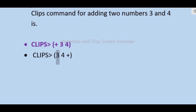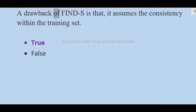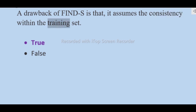The CLIPS command for adding two numbers 3 and 4 is: (clips + 3 4) — not (clips 3 4 +). A drawback of Find-S is that it assumes consistency within the training set — true.